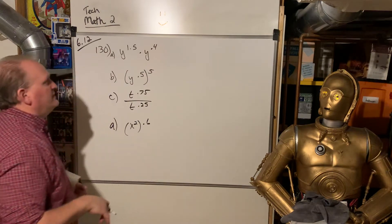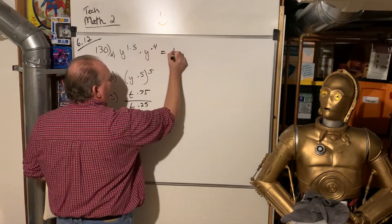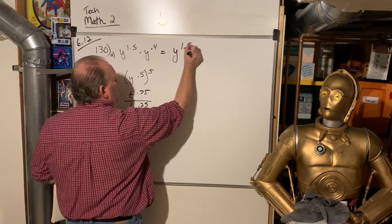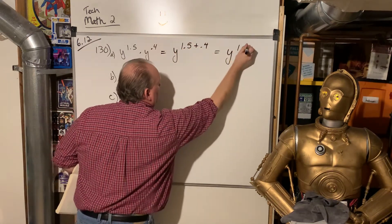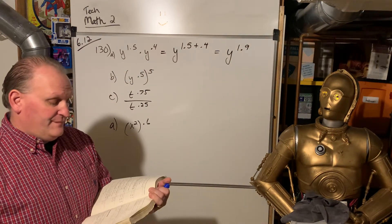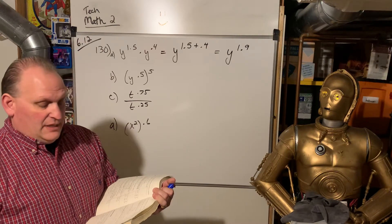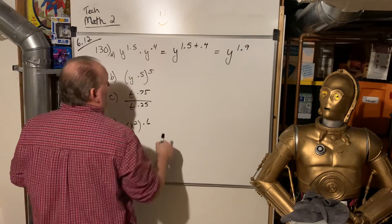So a bunch of different rules, right? When I'm multiplying like bases, I add the exponents. And they're fine with us just leaving the answers as decimals, decimal exponents. So that's good.